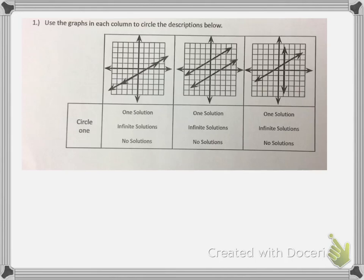We have three graphs below, and each graph is showing a different kind of system of equations. The first graph has two lines that are sharing the same set of lines. When we have a line on top of another, that is an infinite solution.